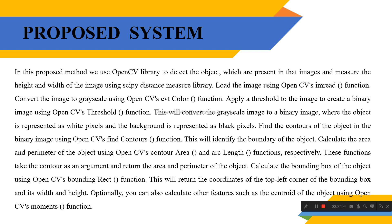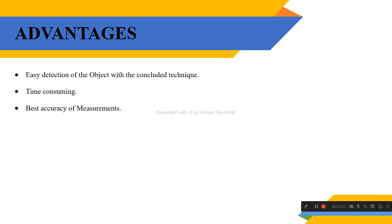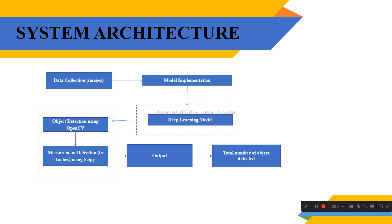It will also calculate the area and perimeter of the object using OpenCV's contourArea and arcLength functions. You can also calculate the center of the object using OpenCV's moments functions. Advantages of the proposed system are: easy detection of objects with the proposed technique, less time consuming, and best accuracy of measurements.